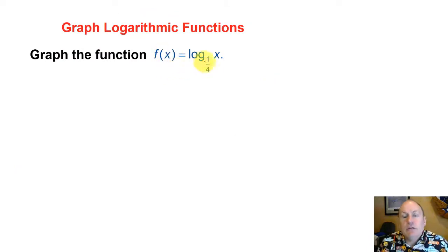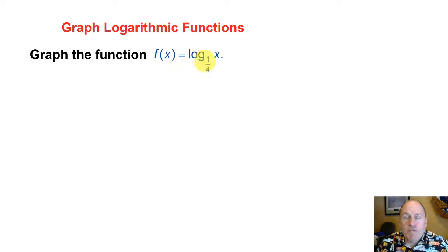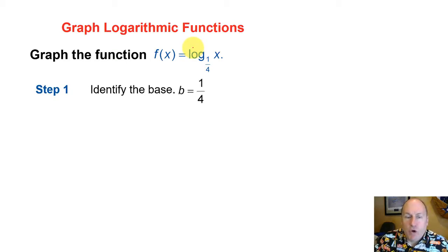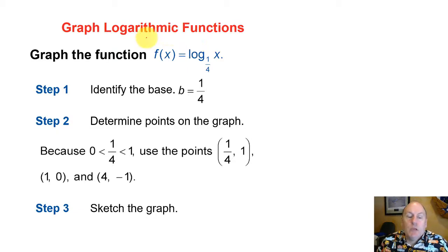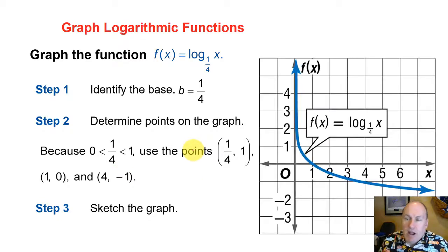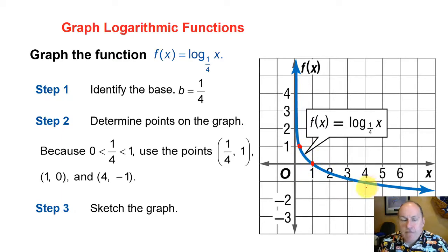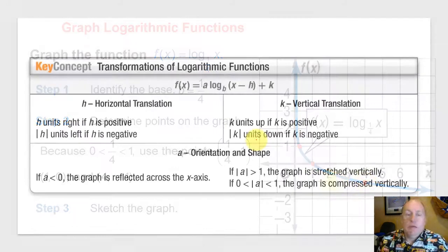Now let's look at the second case where the base is between 0 and 1: f of x equals log base 1/4 of x. The base is 1/4. Using those same three points — 1/4 comma 1, 1 comma 0, and 4 comma negative 1 — when we sketch the graph we get those three points plotted, giving us a decreasing curve.